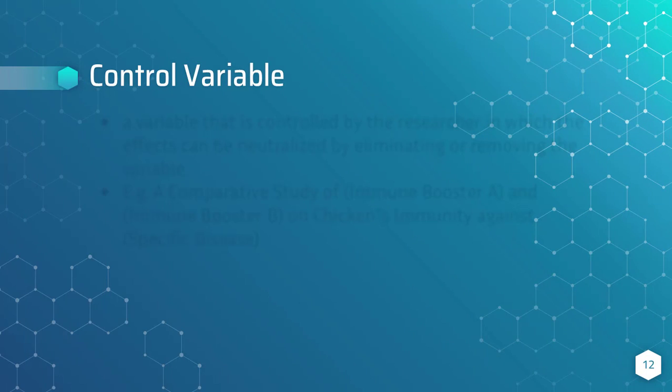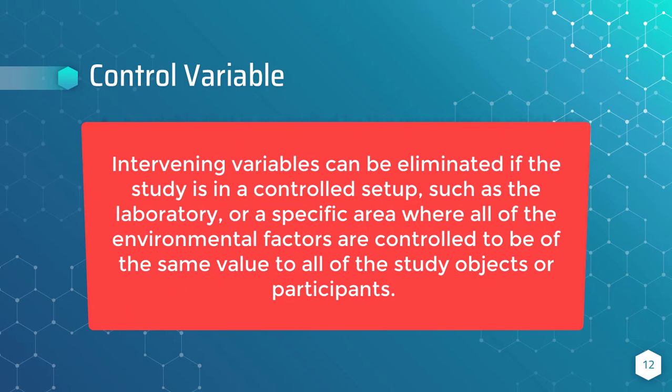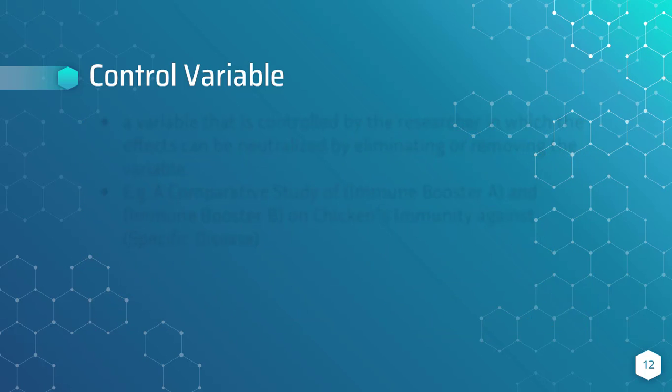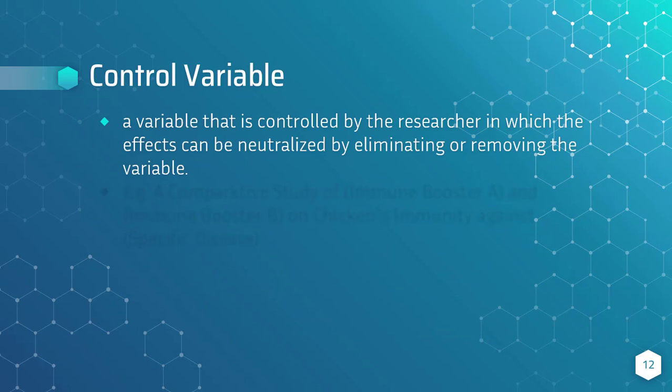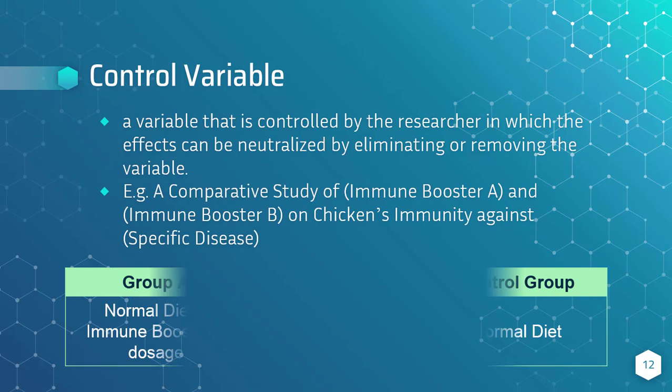Control variable. The intervening variable can be taken out of the picture if the researcher takes the study into a controlled setup, such as the laboratory, or a specific area where all environmental factors are controlled to be of the same value to all study objects or participants. A control variable is a variable that is controlled by the researcher in which the effects can be neutralized by eliminating or removing the variable.